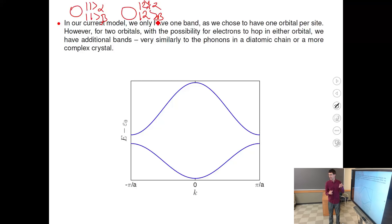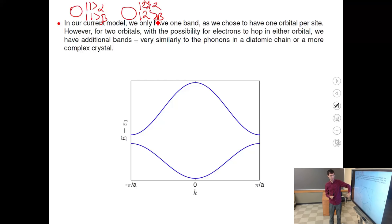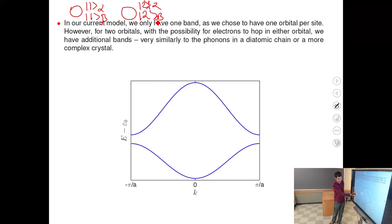For two bands, when redrawn in the extended zone scheme — taking bands from the first Brillouin zone and flipping them into the second — we can see discontinuities at the Brillouin zone boundaries. These are called band gaps: energy intervals with no allowed states. Electrons are not allowed to have energy in these ranges; there are no solutions there.